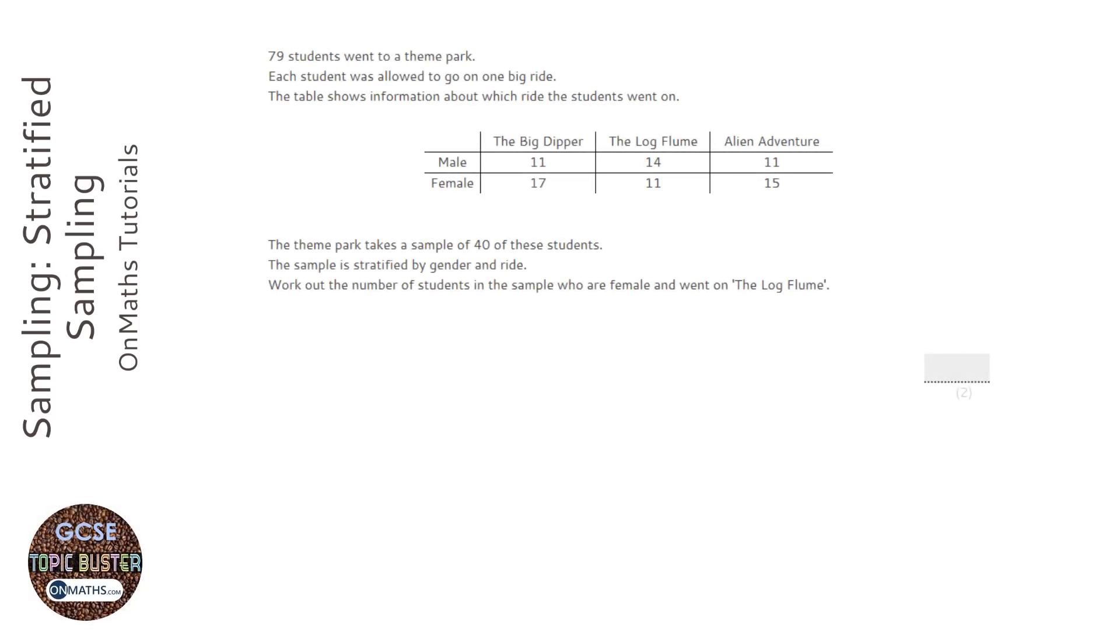We're asked to find the amount of females who went on the log flume from a sample of 40, even though the amounts are out of 79. This is called stratified sampling, and it means that we've got a sample which is part of the population.